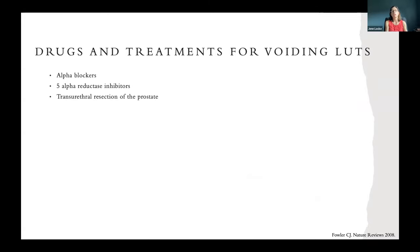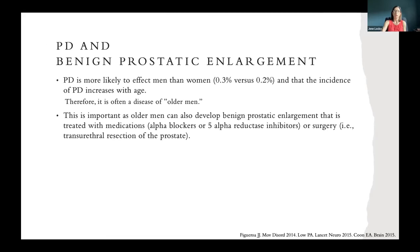For voiding lower urinary tract symptoms — hesitancy, intermittent flow, inability to empty, and needing to double void — we use alpha blockers, 5-alpha reductase inhibitors, and in some cases surgery such as transurethral resection of the prostate. Parkinson's disease is most likely to affect men, and its incidence increases with age, as does benign prostatic hyperplasia. So treatments for benign prostatic enlargement — alpha blockers, 5-alpha reductase inhibitors, and TURP — are used very frequently in this population.